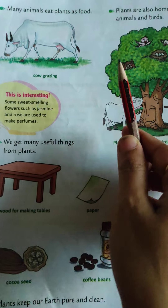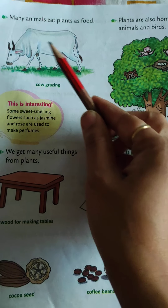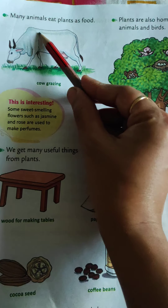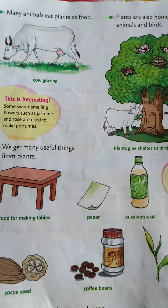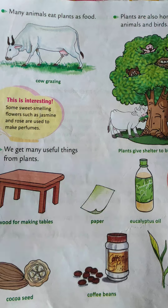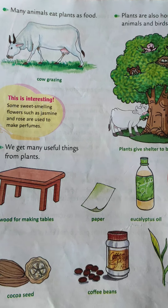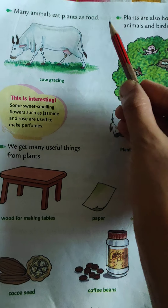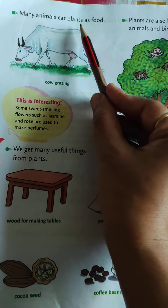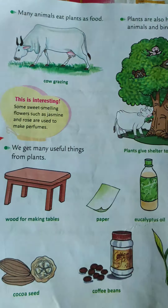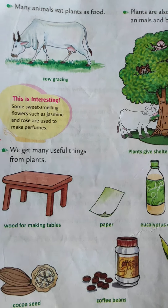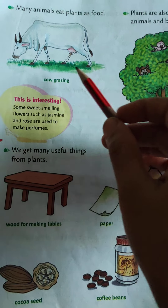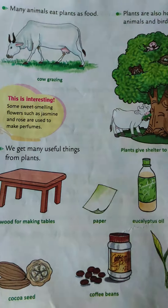Plants are very useful to human beings. Animals are also useful to plants, and many animals eat plants as food. For example, cows eat grass, buffaloes also eat grass and the leaves of trees. So plants are also useful to animals.